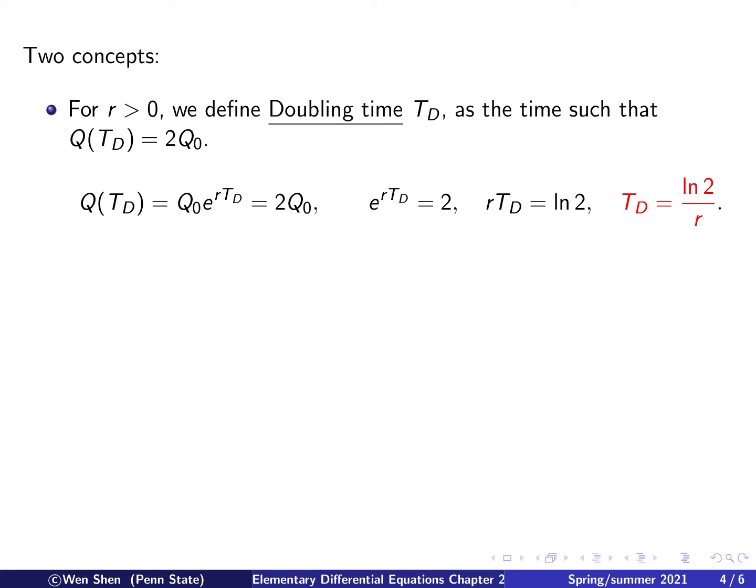Let's take natural log on both sides and I will get rTD equal to ln of 2. And then finally, I can divide both sides by r and therefore get an expression for TD, which is ln of 2 over r. And this is the time where the quantity will double itself.